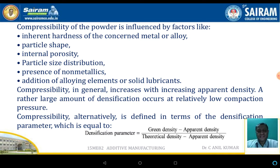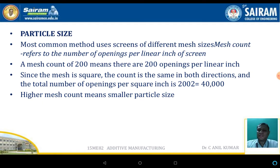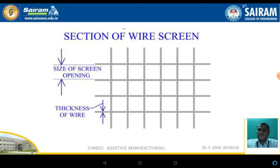The most common method for measuring particle size uses screens with different meshes. Particle size is determined by mesh count — a mesh count of 200 means there are 200 openings per linear inch. A higher mesh count means smaller particle size. The wire screen consists of two wires arranged perpendicular to each other forming a mesh, and the screen opening size represents the size of particle that can pass through it.